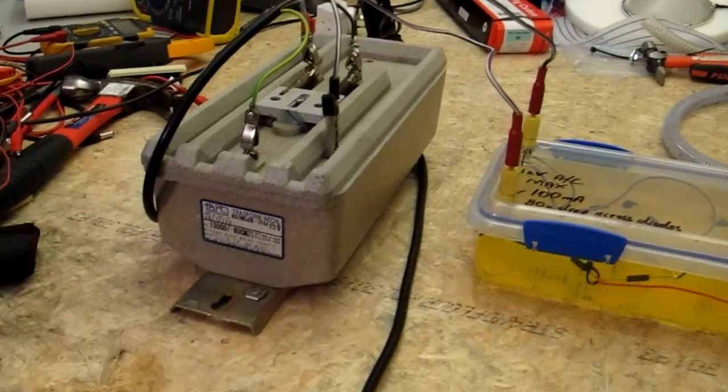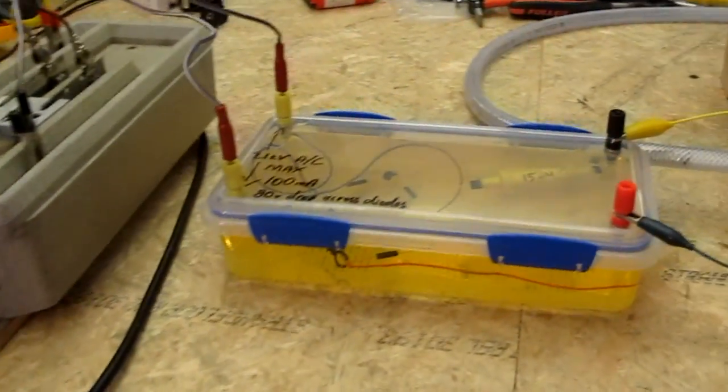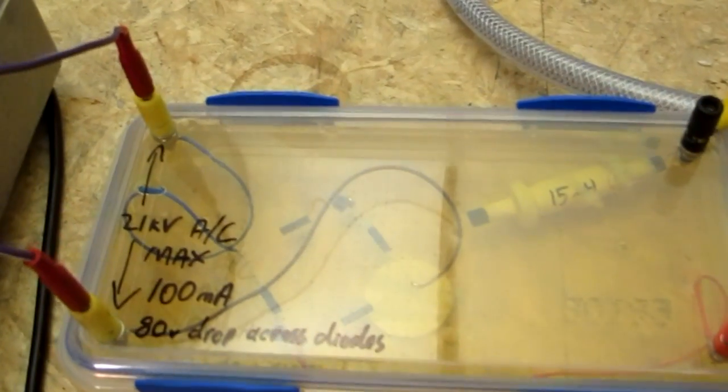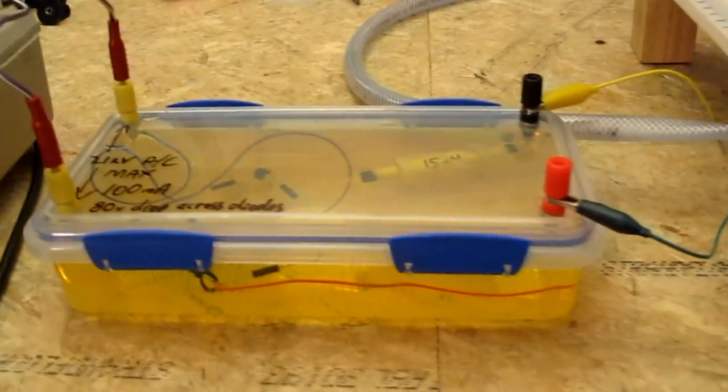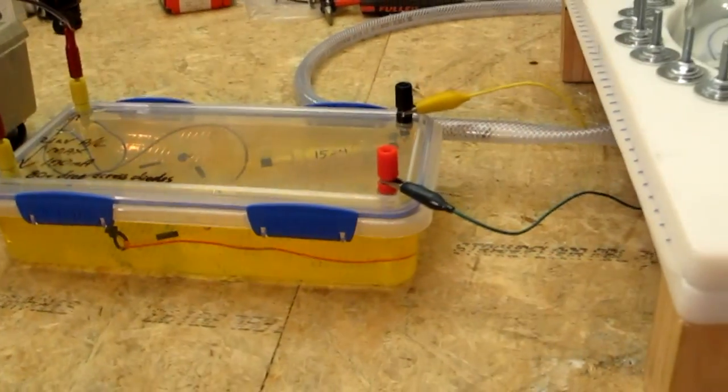So here's my DC setup. I'm using the same 15 kilovolt neon sign transformer, putting it through a bridge rectifier which is submerged in transformer oil there to stop corona, which pumps me up to about 21 kilovolts because of the RMS to peak-to-peak difference.